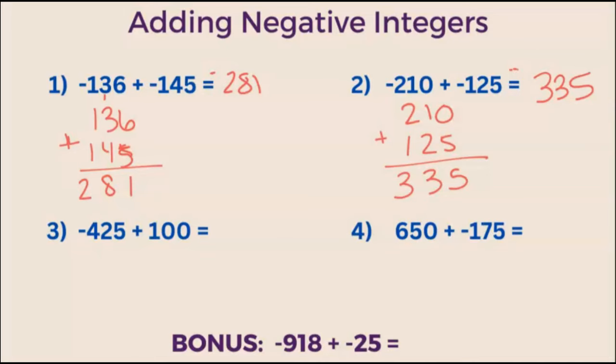Well, the rule for adding positive and negative integers is a little different. First, you take the absolute value of both integers, which means you're making them both positive. And then you're going to subtract them. So we're going to take 425 minus 100. That's going to give us an answer of 325.